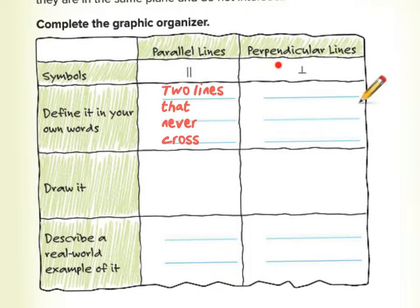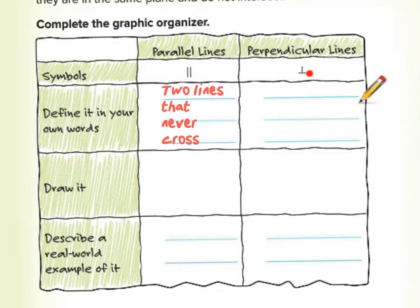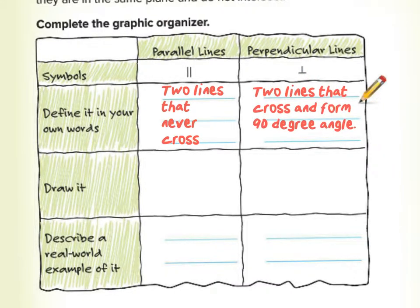Perpendicular lines create a T shape — or in this example, an upside-down T. It could also be a right-side-up T, or sideways. These lines actually do cross; the two lines touch and form a 90 degree angle. Simply put: two lines that cross and form a 90 degree angle.